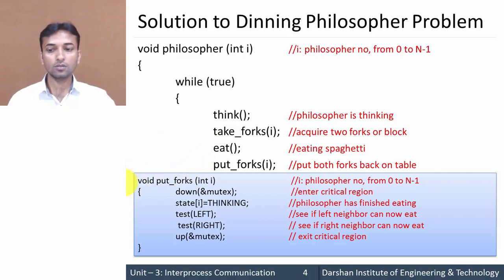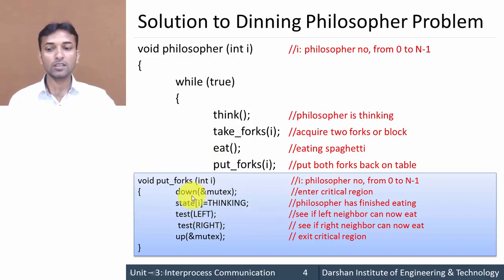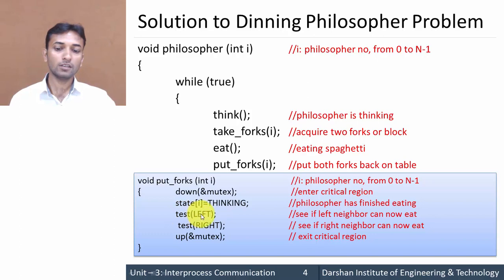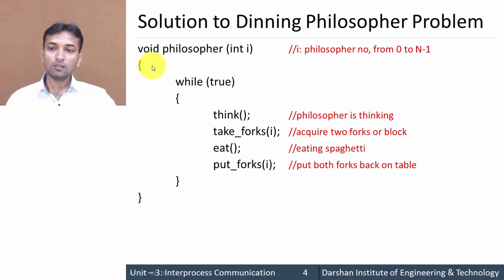In void put_fork(int i), i is the number of the philosopher from 0 to N-1. To put the fork on the table, the philosopher enters the critical section again, so down(mutex) is called. state[i] is changed from EATING to THINKING. Then the philosopher tests both the left-hand neighbor and the right-hand neighbor. After that, up(mutex) is called so that another philosopher can access the critical section. The while loop continues and the philosopher function completes. In this way, the Dining Philosopher Problem executes.